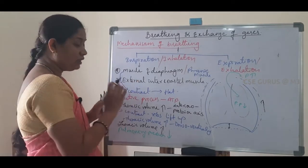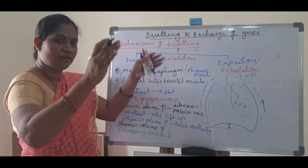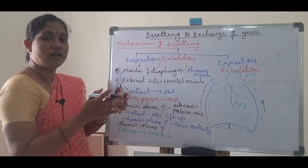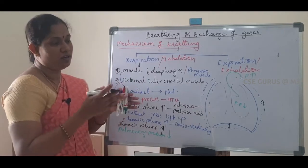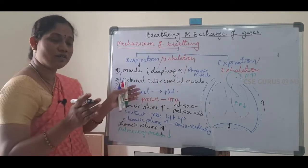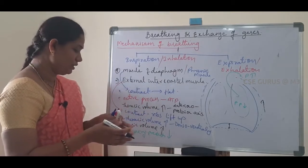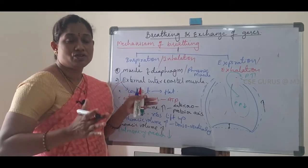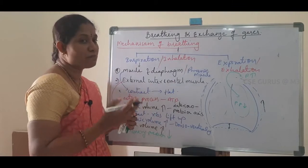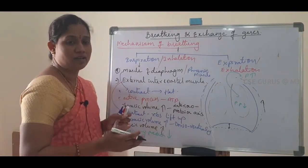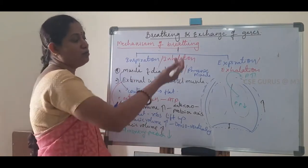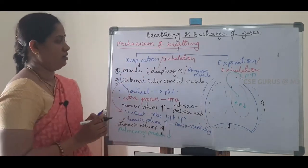Next, the external intercostal muscles contract, causing the ribs to lift up slightly, increasing the thoracic volume dorsally and ventrally. Together, both actions increase the thoracic volume. As a result, pulmonary pressure — the pressure in the lungs — decreases, and air moves inside. This process is called inspiration.